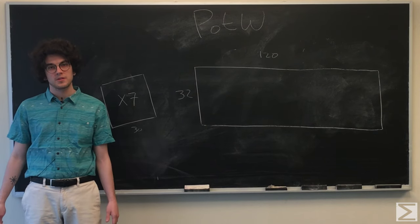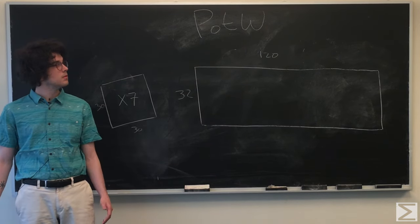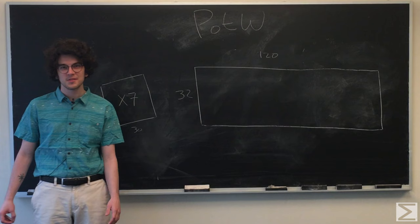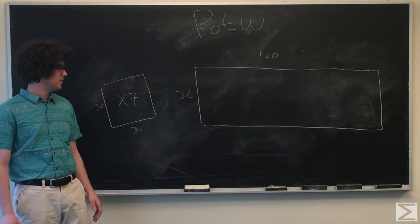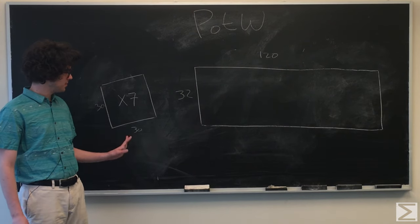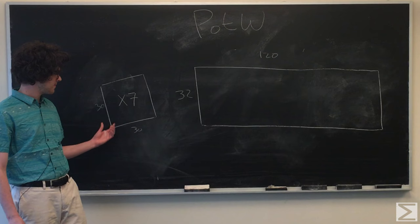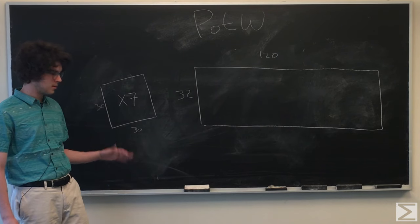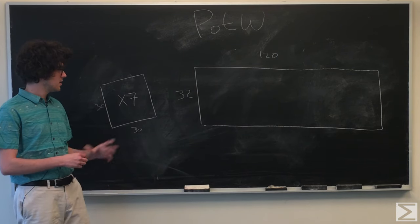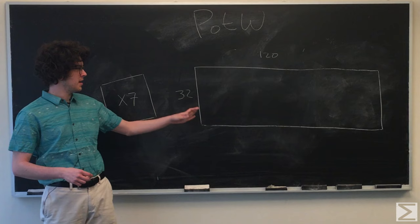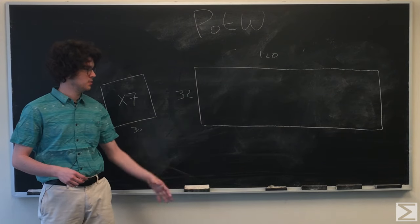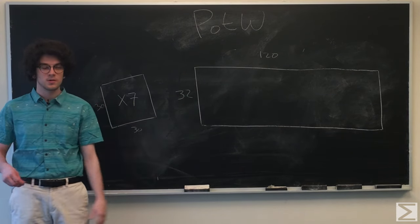Hello and welcome to the World Wide Center of Mathematics Advanced, just regular problem of the week. This week, you're being asked to see if you can prove that you can use seven 30 by 30 centimeter, or whatever units you want to use, squares to cover a 120 by 32 unit sized rectangle.